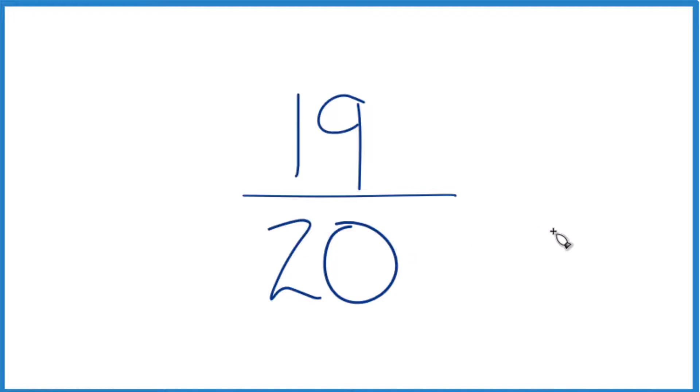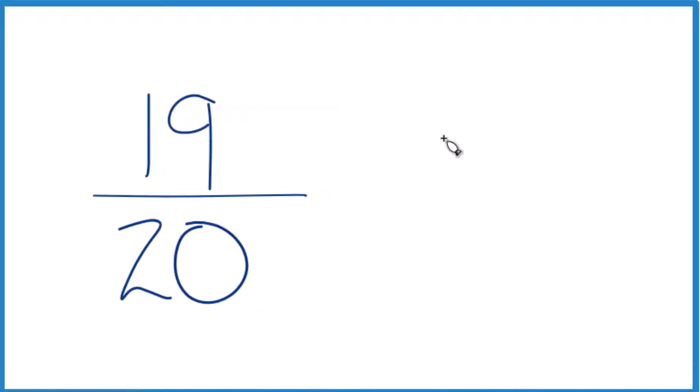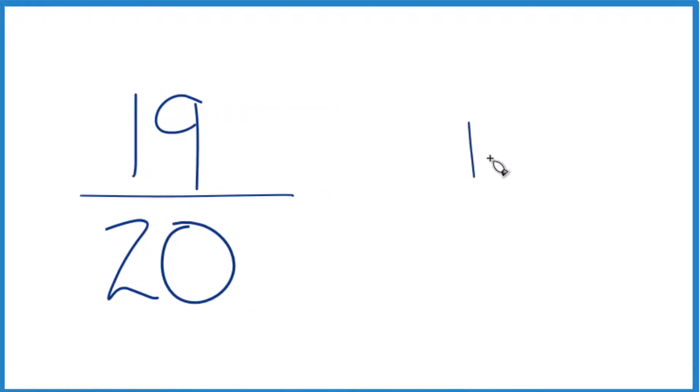You could use a calculator to get the answer for 19 twentieths as a decimal. But we could also just take 19 here and see how many times 20 goes into 19. So, 19 divided by 20.